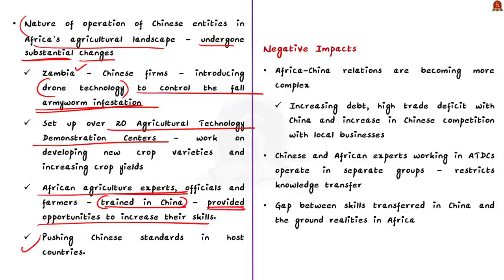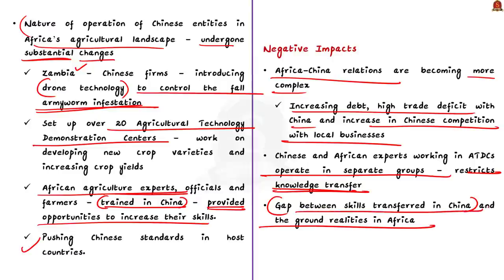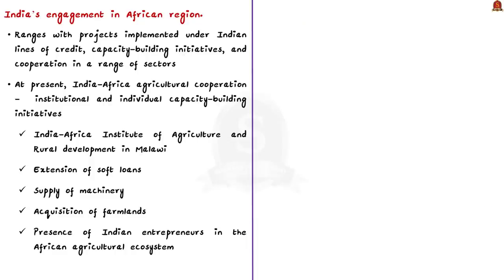At the same time, such intense measures from China have led to cautious attitudes among Africans. Africa-China relations are becoming more complex — increasing debt, a high trade deficit with China, and Chinese competition with local businesses have become causes of concern. Chinese and African experts in agricultural technology demonstration centres operate in separate groups, which restricts knowledge transfer. There also seems to be a gap between skills transferred in China and ground realities in Africa. These are areas where India can focus to strengthen its ties with Africa.